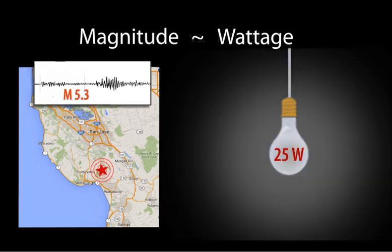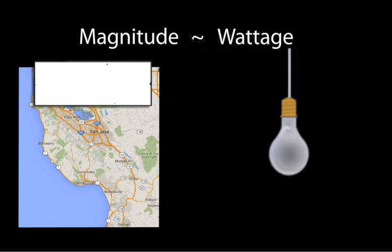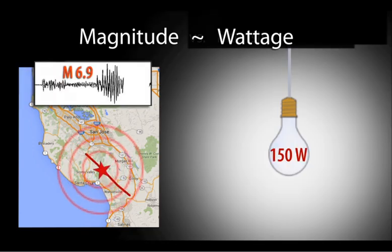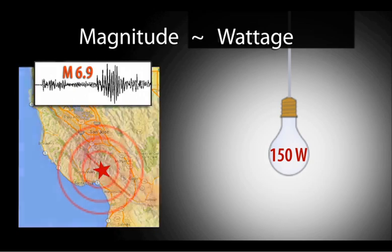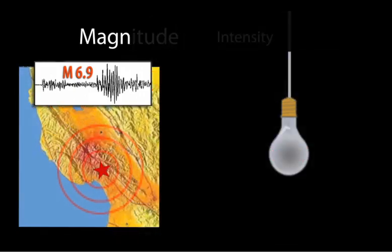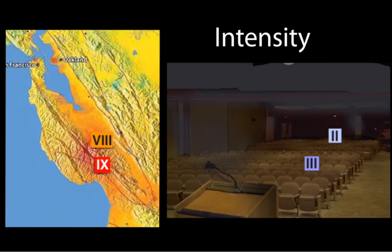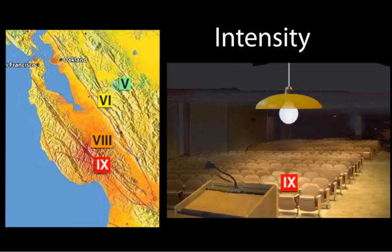Just as the wattage represents the amount of power of the light bulb, the magnitude is related to the total amount of energy released by the earthquake's source. The intensity, or shaking level, is like the amount of light from a light bulb at any spot in a room. A small light bulb in one area of a room will make that area bright with high-intensity light, but it will leave the distant areas of the room dim with low-intensity light.